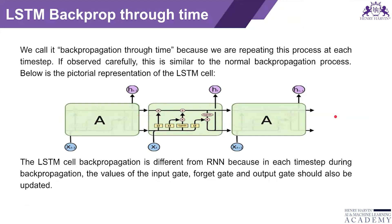So data are again provided — the user will say that this is not correct, so all the data which was provided previously will be reused. The LSTM cell back propagation is different from RNN because at each timestamp during back propagation, the values of the input gate, forget gate, and output gate should be updated — meaning weights will be updated. So which word is important and which is not, we have to make some combination.